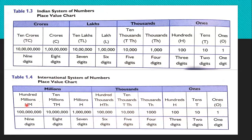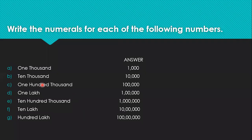Now we will compare both the charts. In both charts, the first five places are the same: ones, tens, hundreds, thousands, and ten thousands. Instead of lakh, we have hundred thousands in the international system. Instead of ten lakh, we have one million. Instead of crores, ten million. Instead of ten crores, hundred million. So ten lakh is called one million, which can also be called ten hundred thousands.